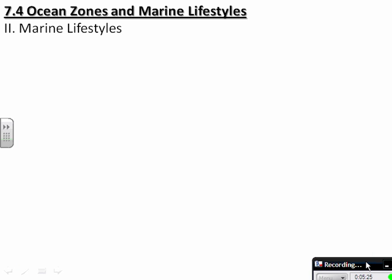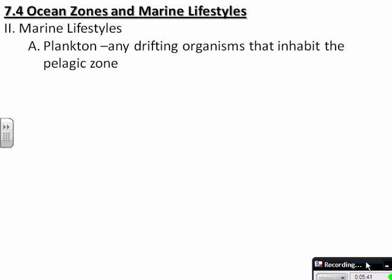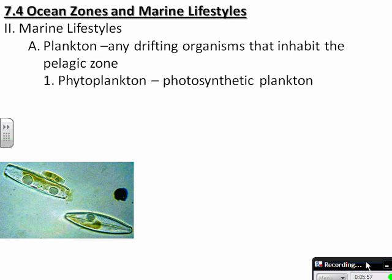Now let's look at marine lifestyles — essentially how different organisms get around in the ocean. There are three main types: plankton, nekton, and benthos. Plankton are any drifting organisms that inhabit the pelagic zone — the ocean drifters. They can be subdivided into phytoplankton, which are photosynthetic and contain chlorophyll, and zooplankton.